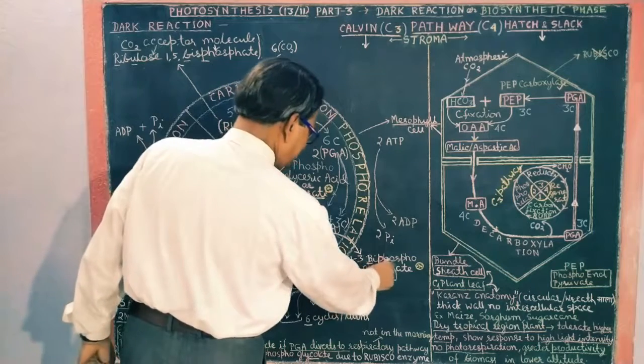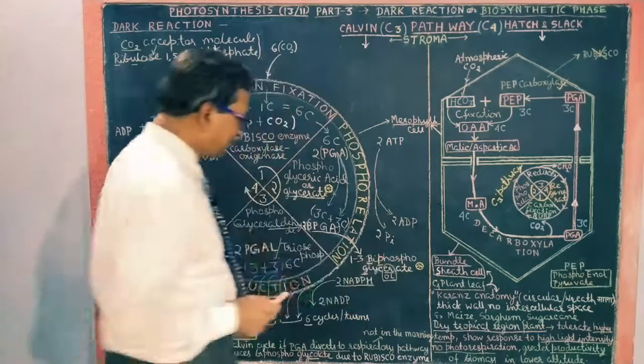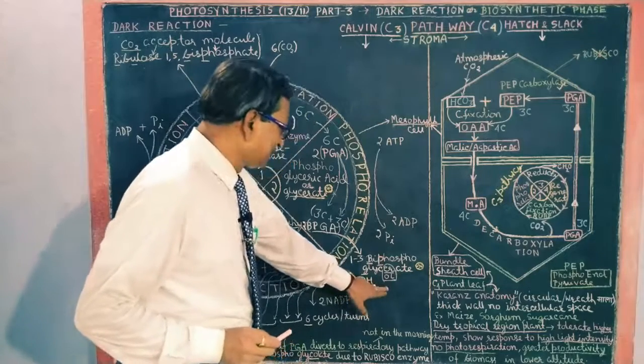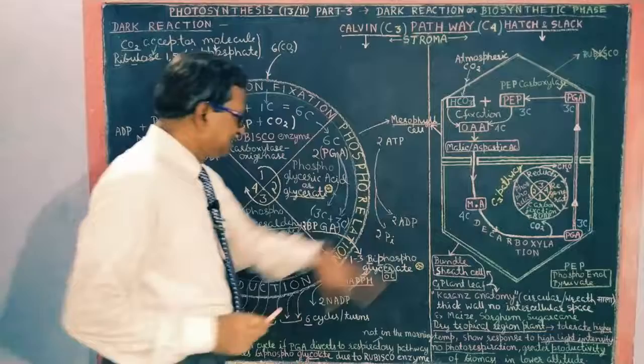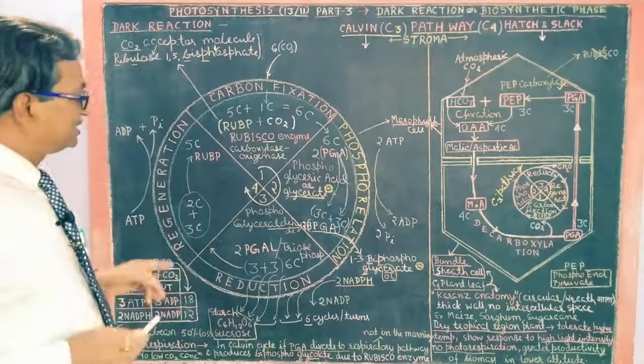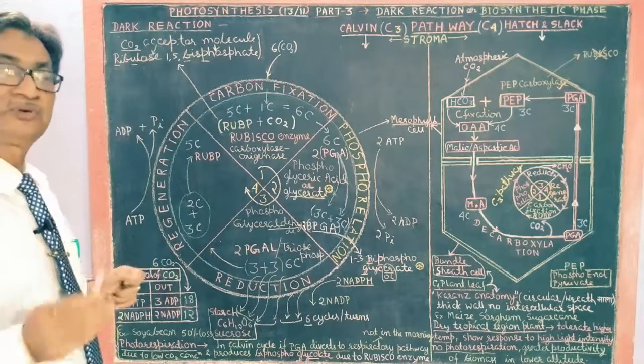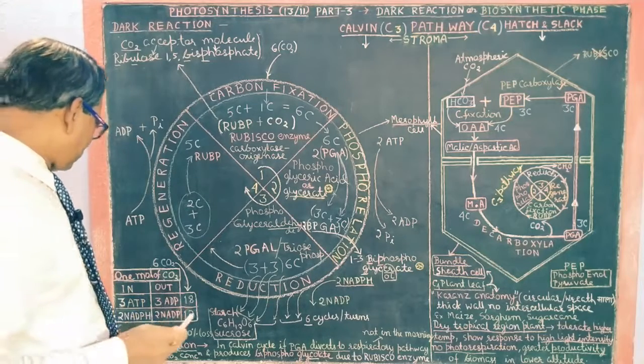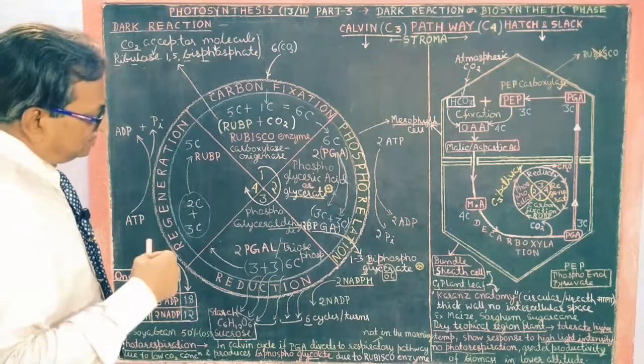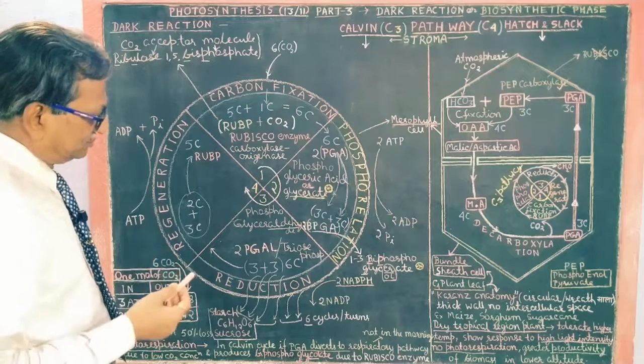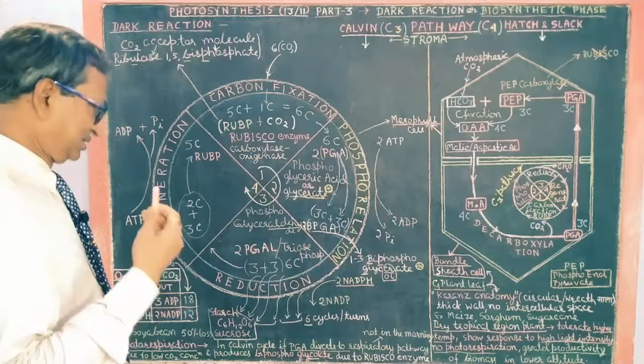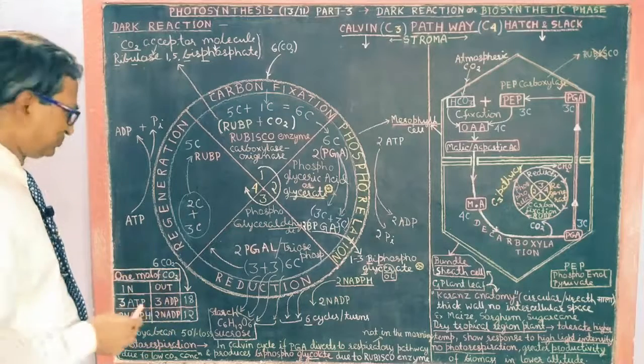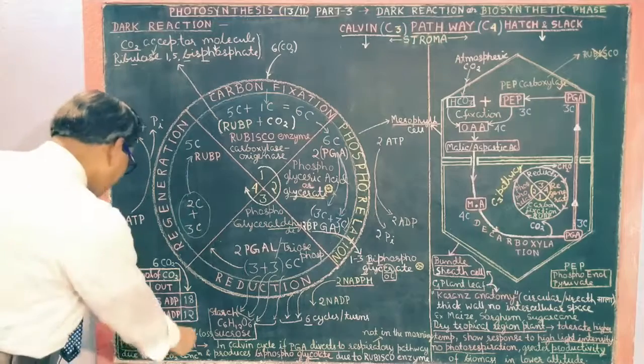This is not 1,3-BP, this is 1,3-BPGA. So in this case, it is used in the phase of BPGA. Photorespiration. When there is high oxygen and it starts releasing CO2, oxidization, photorespiration.